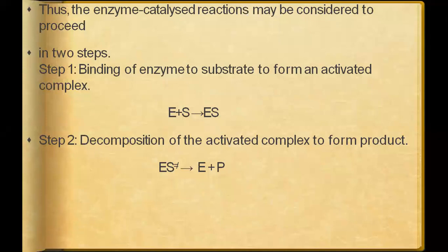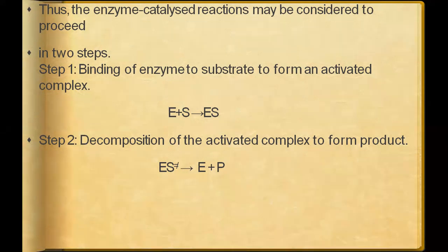The enzyme-catalyzed reaction proceeds by the lock and key mechanism in two steps. Step one: binding of the enzyme to the substrate to form an activated complex — that is, the enzyme-substrate complex (ES). Step two: decomposition of the activated complex to form the product.